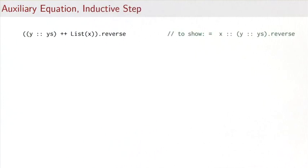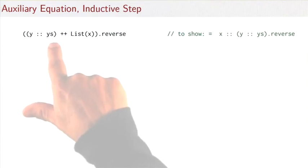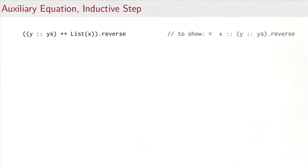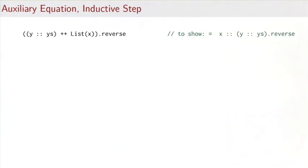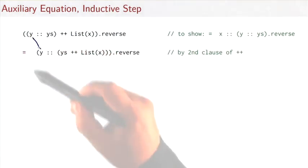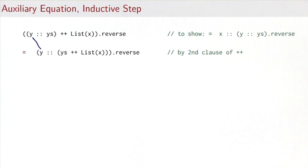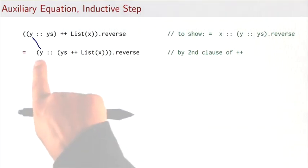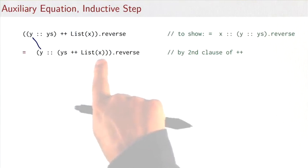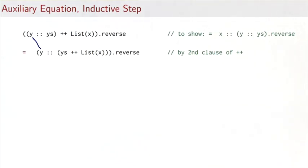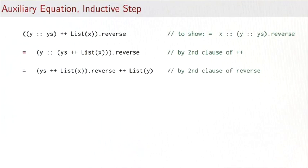For the inductive step, we need to show that (y followed by ys, followed by x).reverse equals x followed by (y followed by ys).reverse. We work on the left-hand side: first, we pull out y using the second clause of concat, giving y as a head element with (ys followed by list of x). Then we invoke the second clause of reverse.